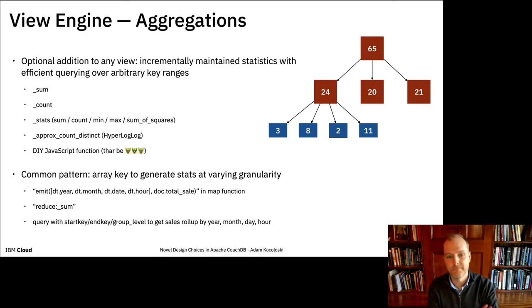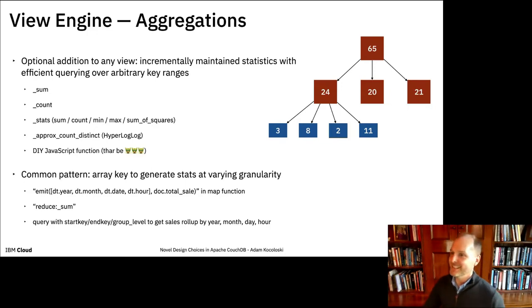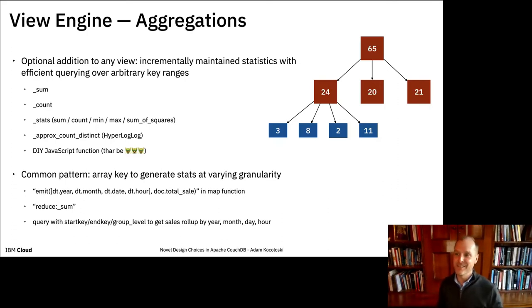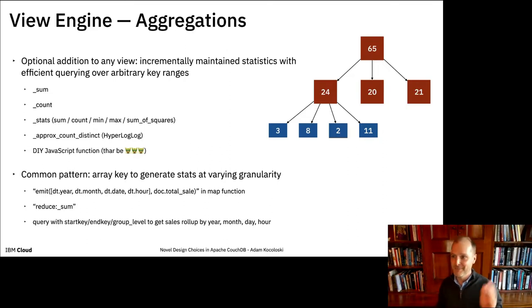The query model is very explicit — this is not the talk for cost-based optimizers or declarative query languages. You know you need this aggregation, it has a unique URL endpoint, and you're being flexible in terms of the ranges you want to query, the number of results, and skipping ranges. You're explicitly going after a particular index you have defined. The built-ins like underscore-sum and underscore-count are special cases handled efficiently.